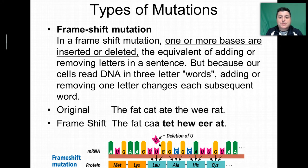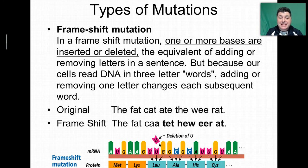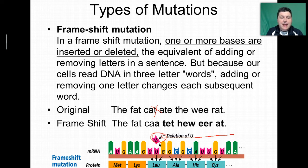Another kind of mutation is called a frameshift mutation. Here, we're adding or deleting a base. Specifically, an insertion is a type of frameshift mutation, or a deletion is a type of frameshift mutation. This is the equivalent of adding an extra letter in a sentence or taking a letter away. If we go back to our original sentence, 'The fat cat ate the wee rat,' and we delete the T in cat, the sentence no longer makes any sense. The same thing would occur if we removed a letter from our DNA bases — everything shifts over because we must read them in groups of three. That's going to change all of the associated amino acids, so frameshift mutations can be very deleterious.